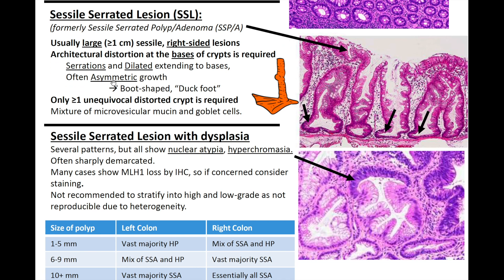Like any polyp, you can have SSL with dysplasia. This can have several patterns but all show nuclear atypia, hyperchromasia, and are often sharply demarcated. Many cases show MLH1 loss by IHC, so if you're concerned, consider staining it. It's not recommended to stratify into high and low grade as it's not reproducible due to heterogeneity. Anytime you look at something that's maybe a less worrisome polyp, you always want to be looking for high-grade dysplasia or any invasion or carcinoma — it's often the second diagnosis we need to look for.